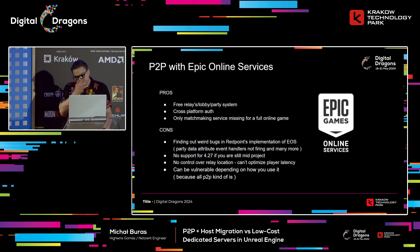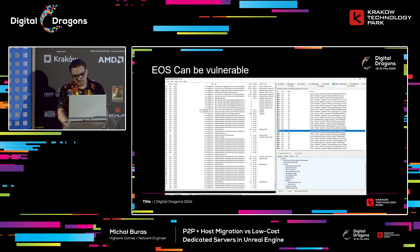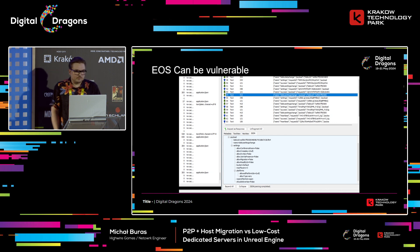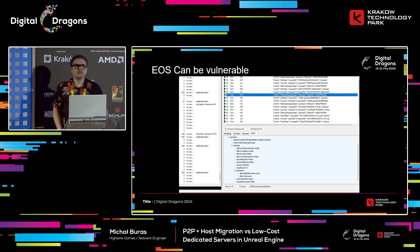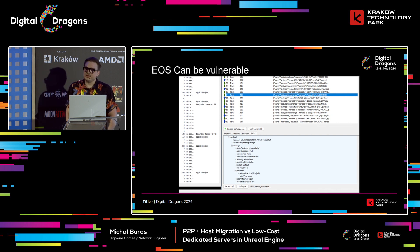EOS can also be vulnerable. My colleague Andrew highlighted this: there's an app called Fiddler — a 10-year-old kid can download it, double-click, and intercept traffic from the EOS party system. All the party data is written in plain JavaScript over a WebSocket connection. In a peer-to-peer game, someone is authoritative over everything, so it's easy to expose private user data through this channel. EOS can be vulnerable if we don't carefully watch what we send through it.